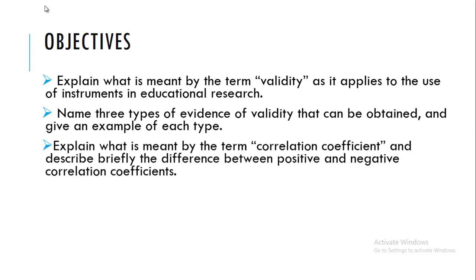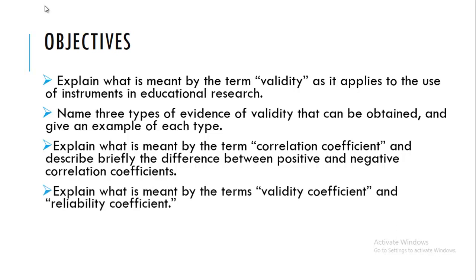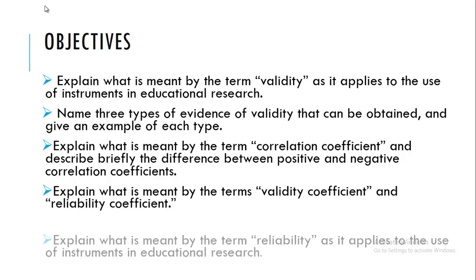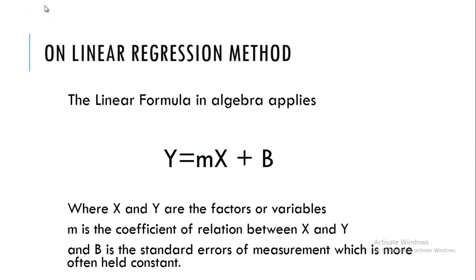Further objectives include: Explain what is meant by the term correlation coefficient and describe briefly the difference between positive and negative correlation coefficients; Explain what is meant by the terms validity coefficient and reliability coefficient; and explain what is meant by the term reliability as it applies to the use of instruments in educational research. Most of these objectives are addressed in the above slides.